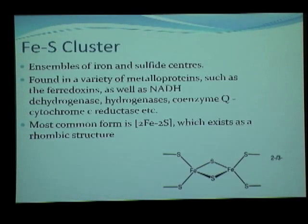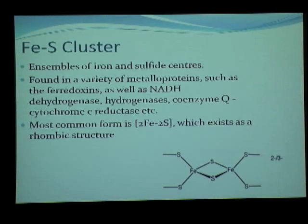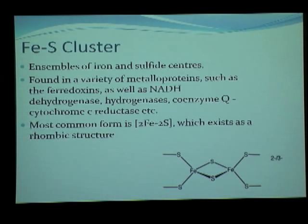What is an iron-sulphur cluster? Iron-sulphur clusters are basically ensembles of the iron and sulphide centres. They are found in a variety of metal proteins like the ferredoxins, the NADH dehydrogenase, cytochrome reductase, etc. The most common form is the 2Fe-2S form, which exists as a rhombic structure. It can either be in the reduced form or the oxidised form. The reduced form has one iron in the 2+ and the other in the 3+ state, while in the oxidised form both are in the 3+ state.